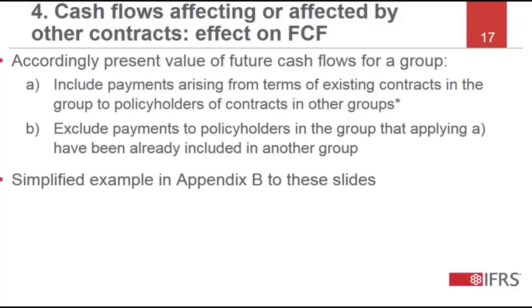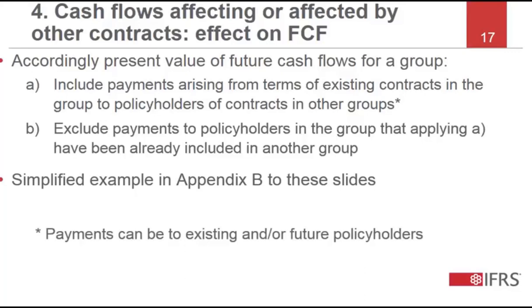The example uses simplified facts to clearly illustrate this IFRS 17 requirement only. Sometimes the expected payments to policyholders of contracts in other groups are to expected future policyholders. The terms of an existing contract may be such that the entity is obliged to pay policyholders amounts based on underlying items but with discretion over the timing of the payments, meaning some amounts may be expected to be paid to policyholders of contracts that are expected to be issued in the future. From the entity's perspective, the terms of the existing contract require it to pay the amounts, even though it does not yet know when or to whom it will make the payments.